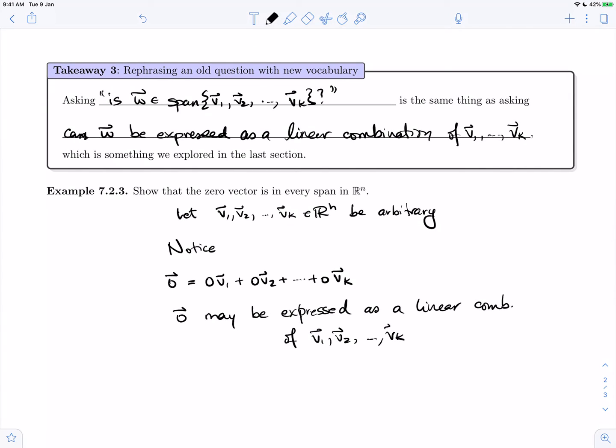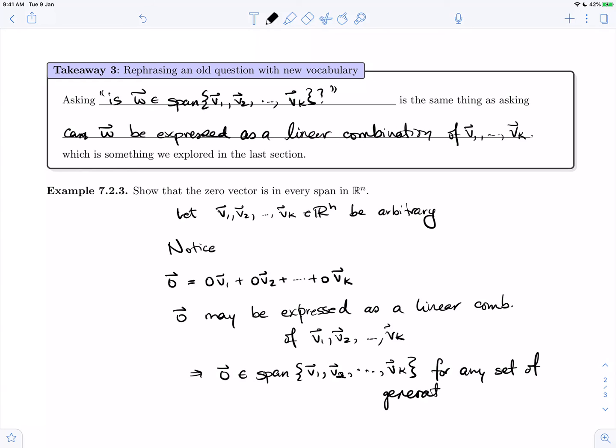Well, spans contain absolutely all linear combinations, and therefore zero is in the span of v1, v2, to vk for any set of generators. Therefore the zero vector is in every span.